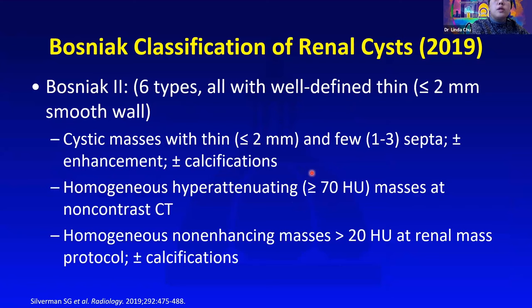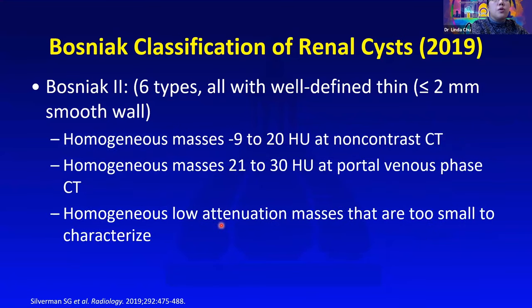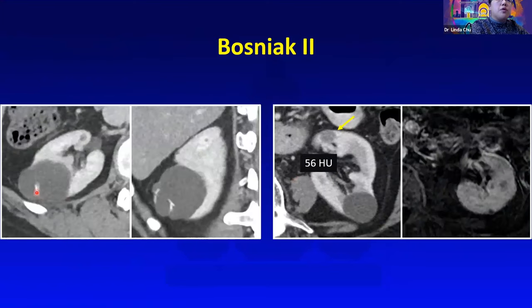With Bosniak 2, they subclassified it into six subtypes, and they include cystic masses with a few septations. They can have calcifications. You also have proteinaceous cysts that are intrinsically hyperdense on non-contrast, and they can be homogeneous non-enhancing masses that are more than 20 Hounsfield units on post-contrast images, and also some low attenuation masses that are too small to characterize. For example, a few thin septations with some mural calcifications is Bosniak 2, as is an intrinsically bright lesion that does not enhance — that is a proteinaceous cyst, also Bosniak 2.